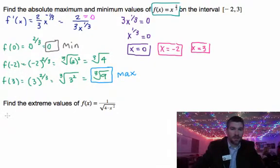So again, what we need to do is, we're not given an interval on this, so we're going to find the derivative. I'm just going to start with a quick rewrite of what this problem looks like because I don't want to take a derivative the way it's given to me. So I'm going to go ahead and say that this is 4 minus x squared to the negative 1/2.